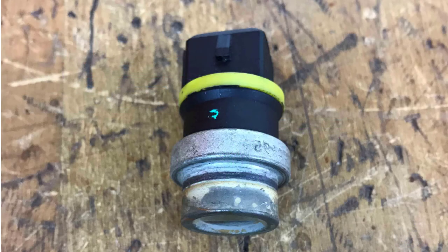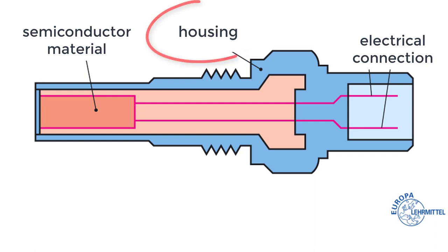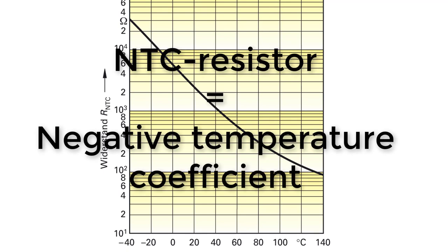The temperature sensor is structured as follows. In a housing, a measuring resistor made of semiconductor material is installed. The semiconductor material is a material having a negative temperature coefficient. It is therefore also called an NTC resistor.